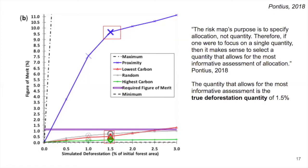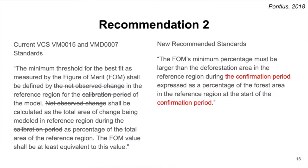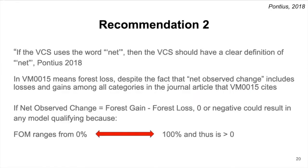The extrapolated deforestation quantity can vary depending on the method of extrapolation, and the calibration period may differ in duration from the confirmation period. To avoid these complications, it makes more sense to simulate the true deforestation quantity, which in the Bolivia study is 1.5%. The second recommendation concerns the required FOM: Pontius 2018 recommends dropping the language of 'net observed change' and instead requiring the FOM to be defined by the confirmation period, not the calibration period. The meaning of net observed change is ambiguous in the VCS methodologies, particularly in VM0015.